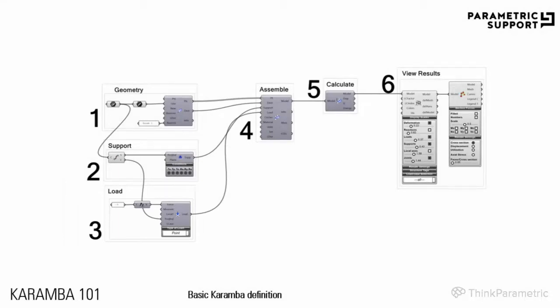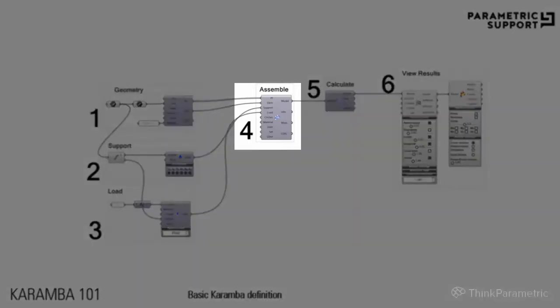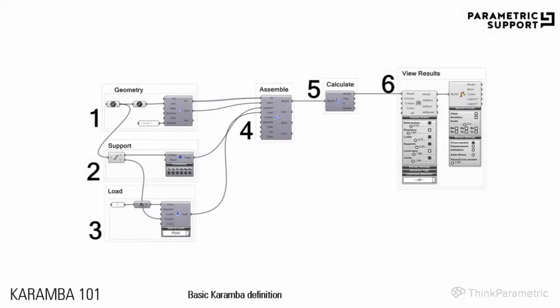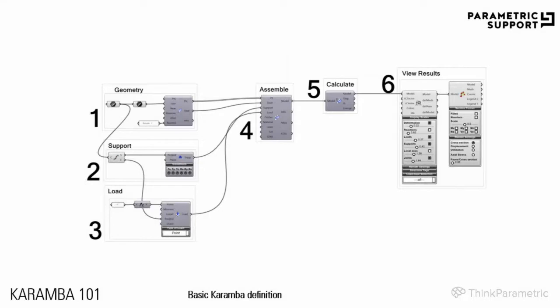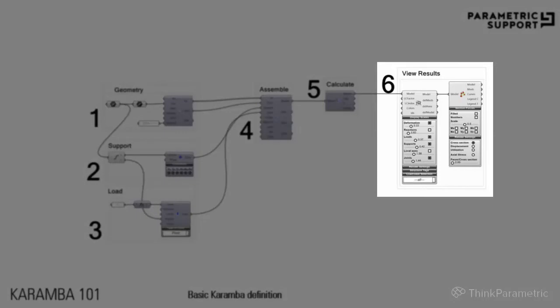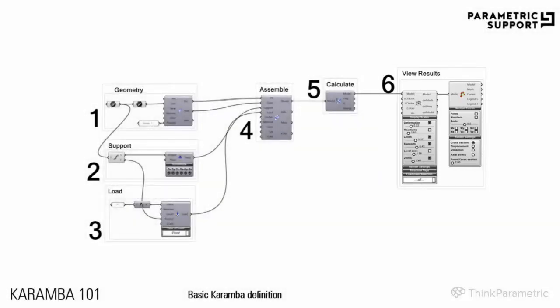The cross-sections and materials are optional. The assembled model puts all these elements together into a statical model ready for Karamba to be calculated. In the fifth step, using one of the algorithms provided by Karamba, you could calculate the reaction of the statical model to the applied loads and predefined boundary conditions. After calculation, you could see the results using three components: Model View, Beam View, and Shell View. Let's now have a closer look at each of these steps.